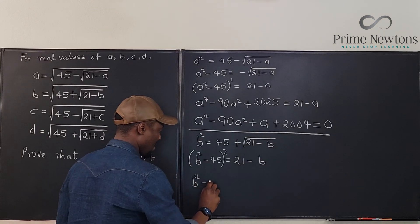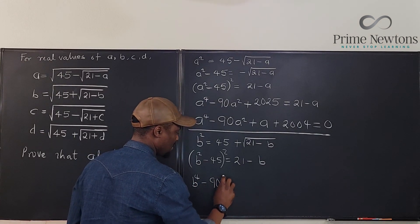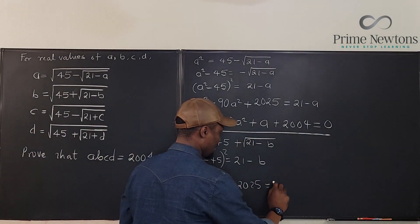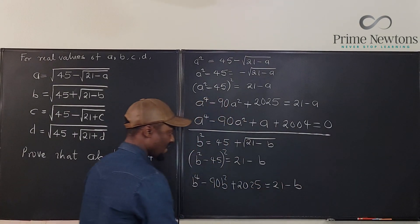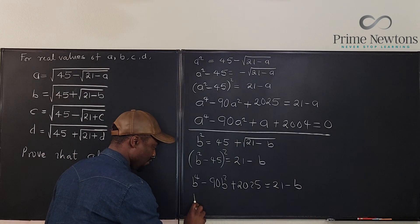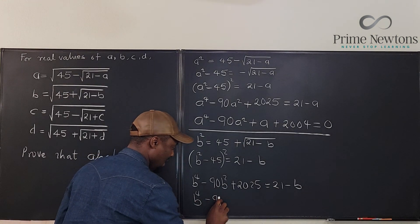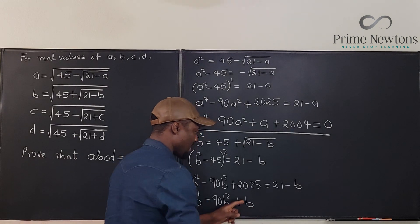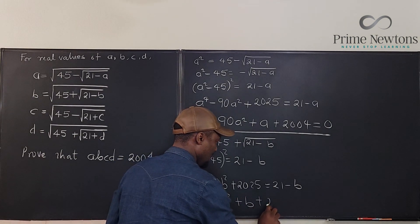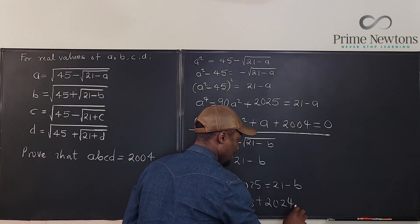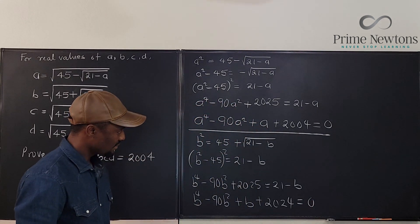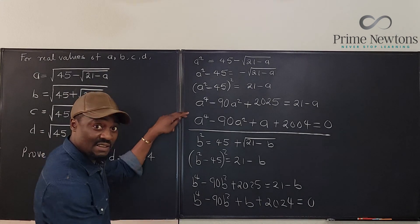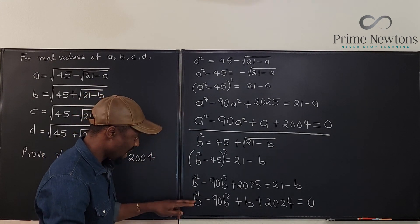B to the fourth minus 90 B squared plus 2025 equals 21 minus B. Now, if you bring all together, you have B to the fourth minus 90 B squared. Bring this B here. It becomes plus B. And this would be plus 2024 equals zero. Now, is this the same thing as this?